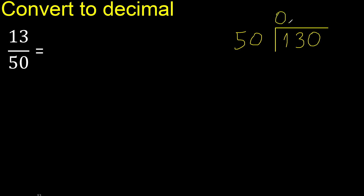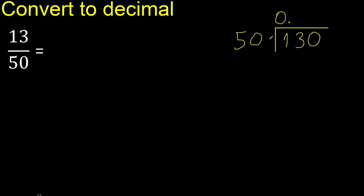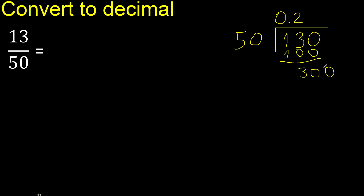Here 0 point. 130 is not less than 50 — multiply by which number is nearest to 130 but not greater. Multiply by 3 is greater; multiply by 2 is 100. Subtract: 30 remains. There is no number that goes down, therefore complete — always complete with 0.